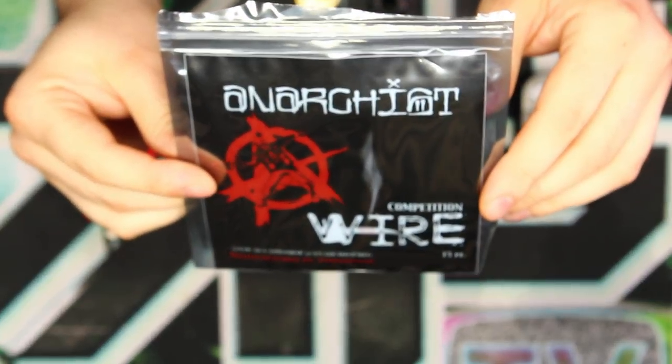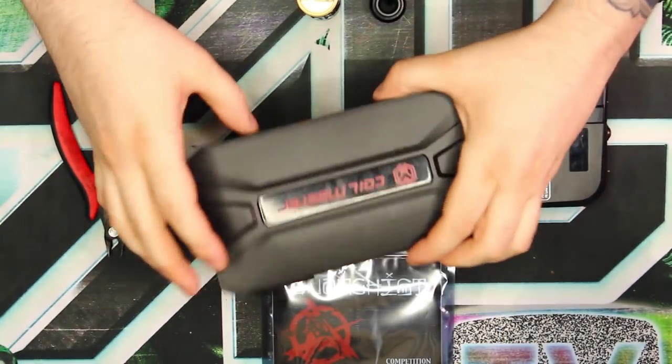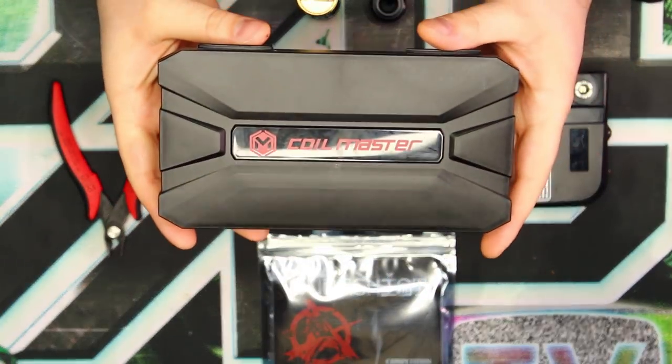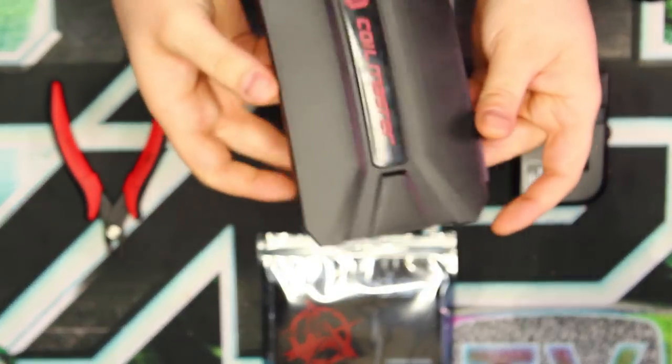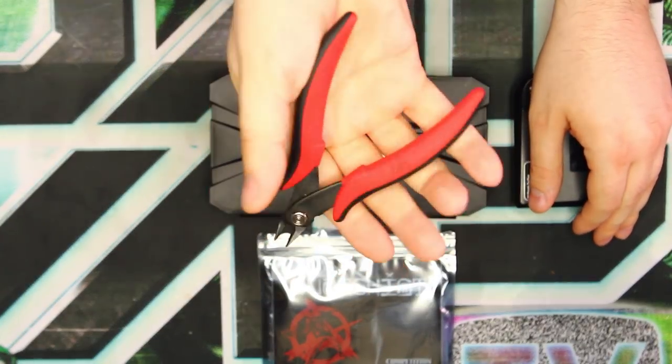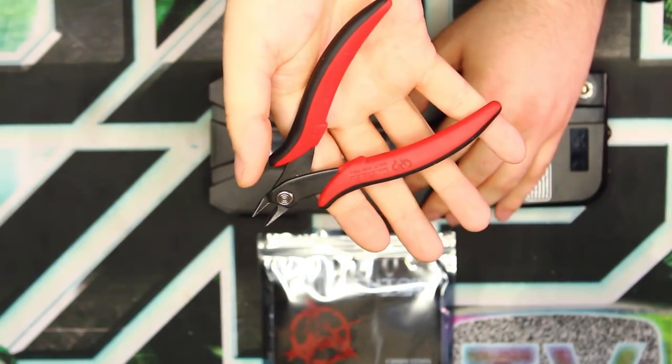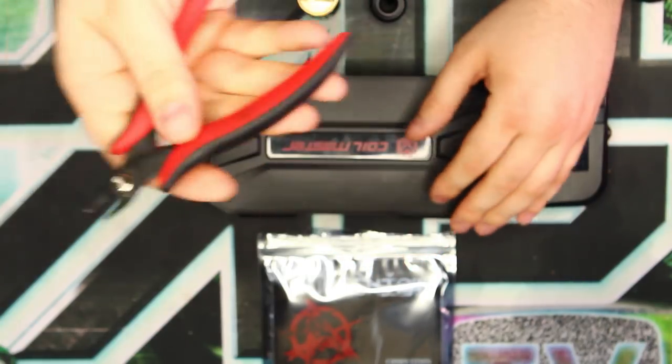This stuff is absolutely massive and that's what we're gonna be wrapping with today. We've got the Coil Master Mini DIY V2 kit, as you can see here. And then we have our spare pair of clippers because the ones that come in this kit probably can't handle the 21 gauge. So I'm gonna use the heavy-duty ones today.